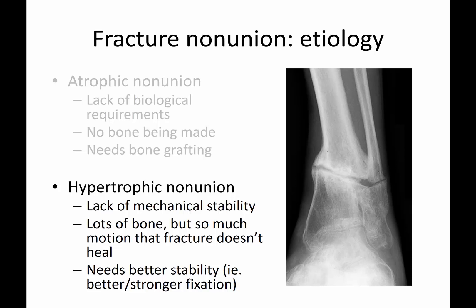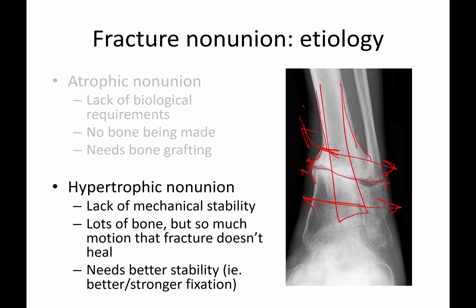As opposed to a hypertrophic non-union, where there's a lack of mechanical stability and the bone is actively making bone. You can see all this bone being made here and here, but it just doesn't bridge across — because the fragments are constantly moving, bone builds outward in each direction rather than bridging the gap. So there's a lot of bone, but so much motion that the fracture doesn't heal. Treatment for this is just better stability — you go in and fix it with a plate and screws, and then it heals.